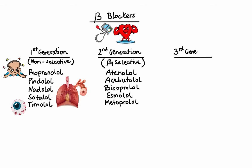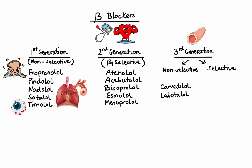Third-generation beta-blockers require special attention because things get tricky. Unlike the first generation (non-selective) and second generation (selective), the third generation includes both non-selective and selective beta-blockers. What makes them distinct is that they also act on blood vessels to cause vasodilation. Non-selective agents such as carvedilol and labetalol produce peripheral vasodilation by blocking not only beta but also alpha-1 receptors. On the other hand, beta-1 selective agents such as nebivolol produce vasodilation by inducing the release of nitric oxide from endothelial cells, and betaxolol is thought to produce vasodilation by additionally blocking calcium channels.